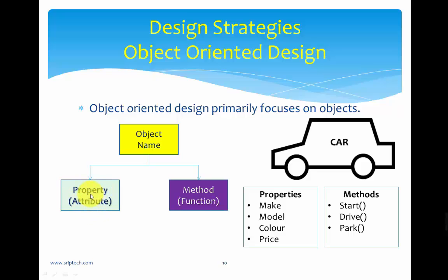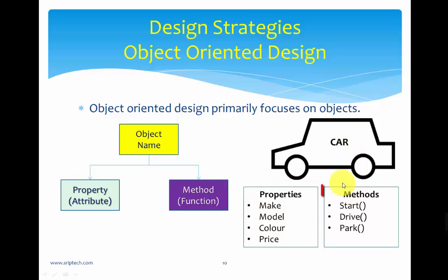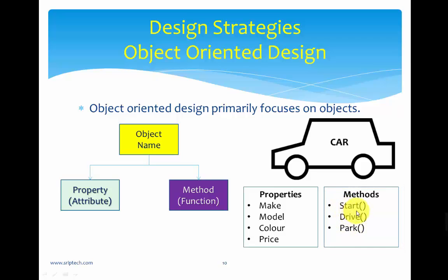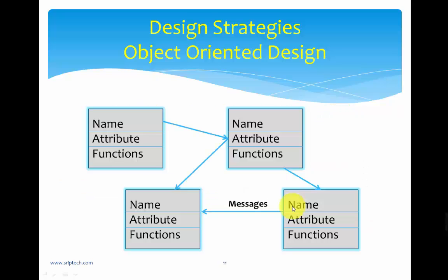Properties of an object describe that object. Take the example of a 'car' object: it has properties like make, model, color, and price, which describe the car. It also has methods like start, drive, and park — these methods are unique to the car and contain logic for what happens when you start or drive the car. These properties and methods are encapsulated within the object 'car.' Similarly, we identify multiple objects in a problem, convert them into programming objects, and interrelate them by transferring data as messages.